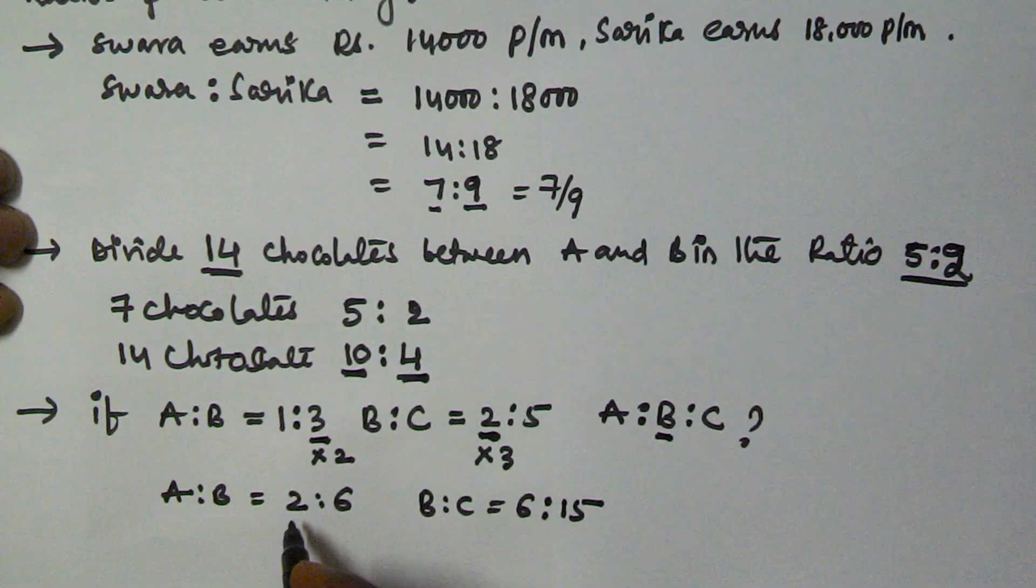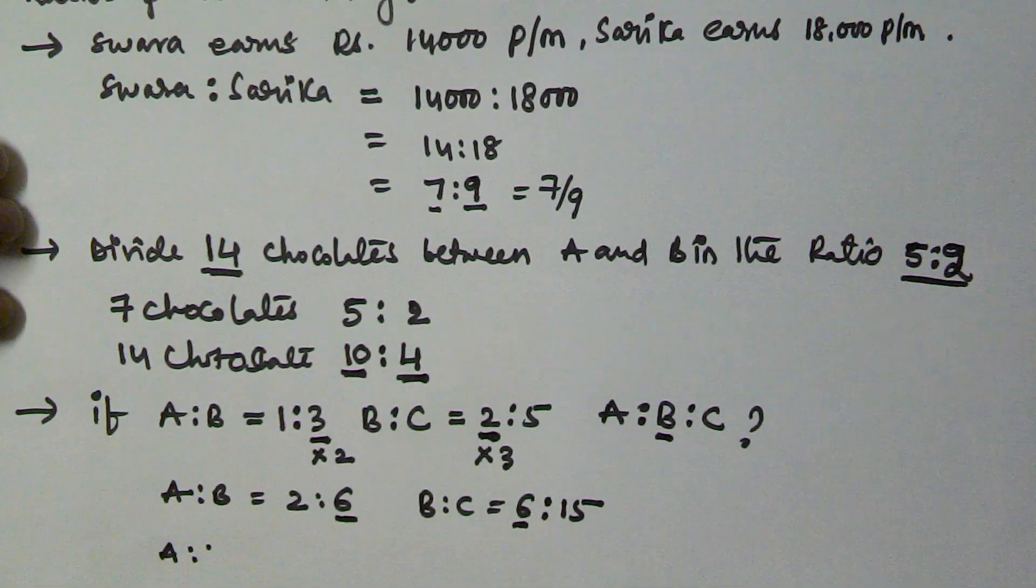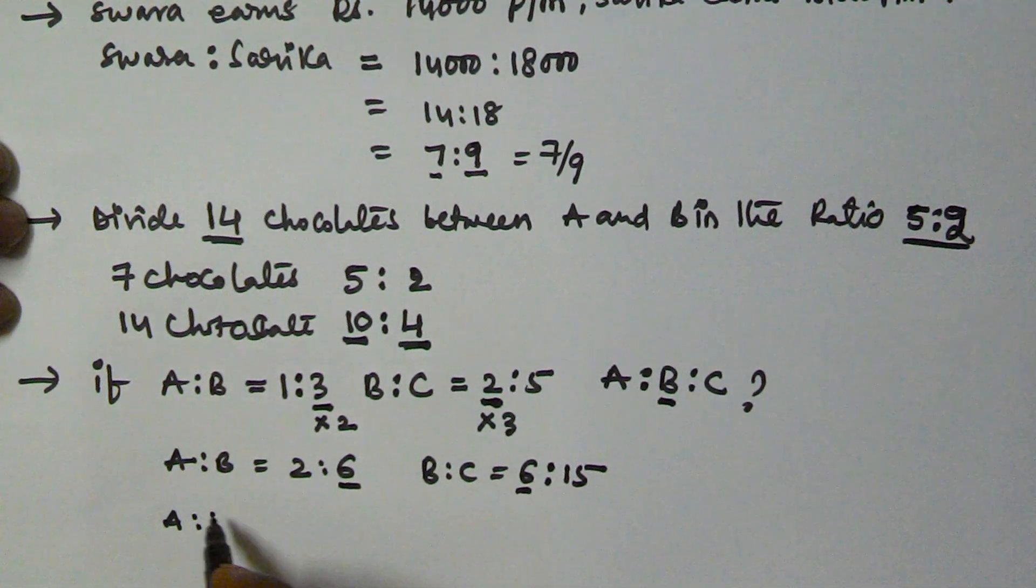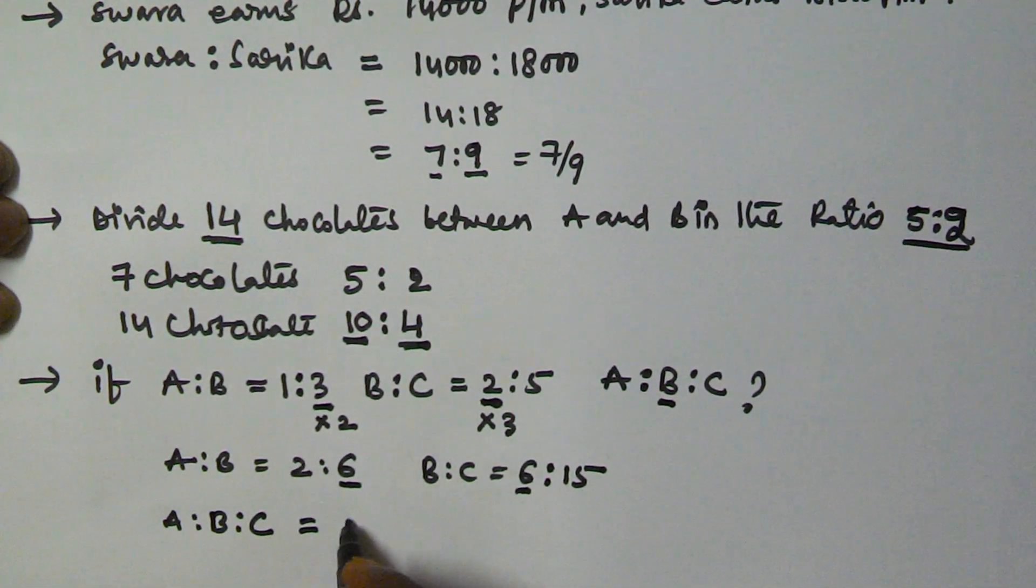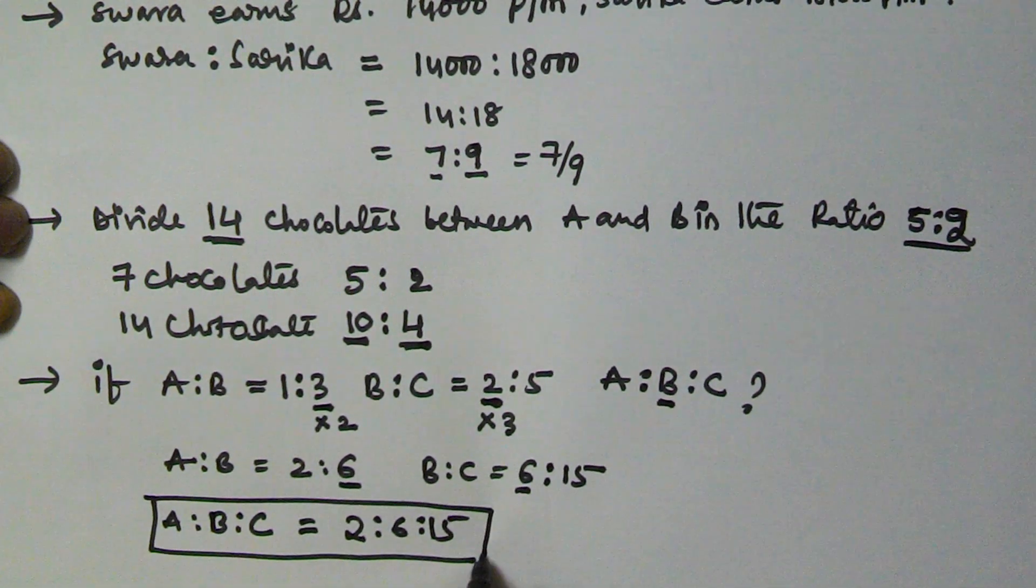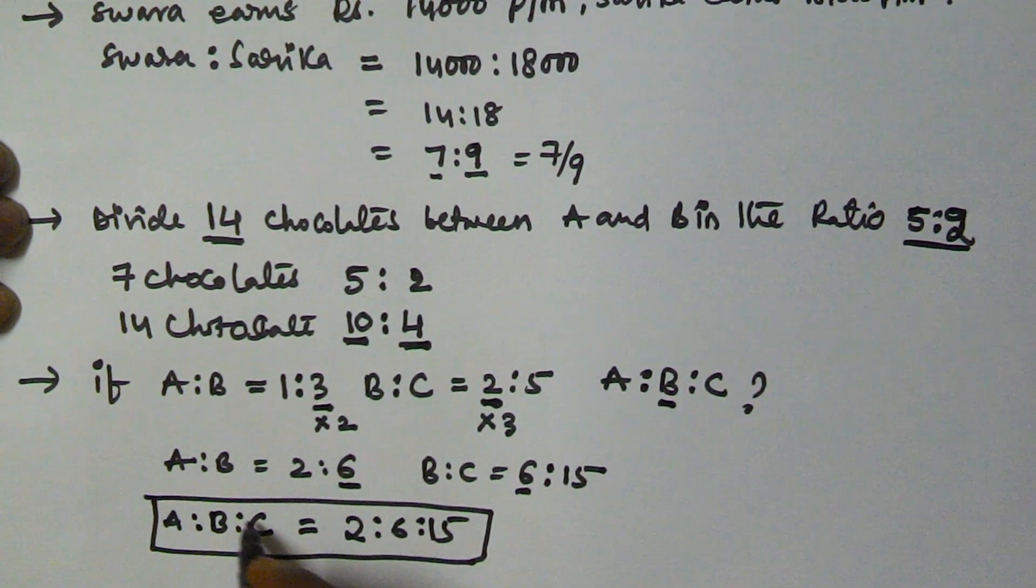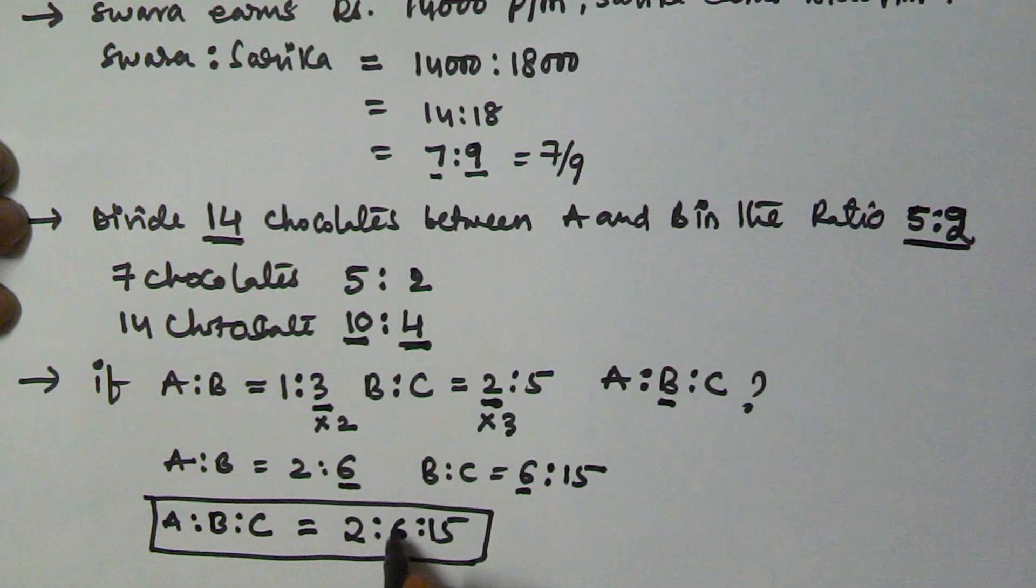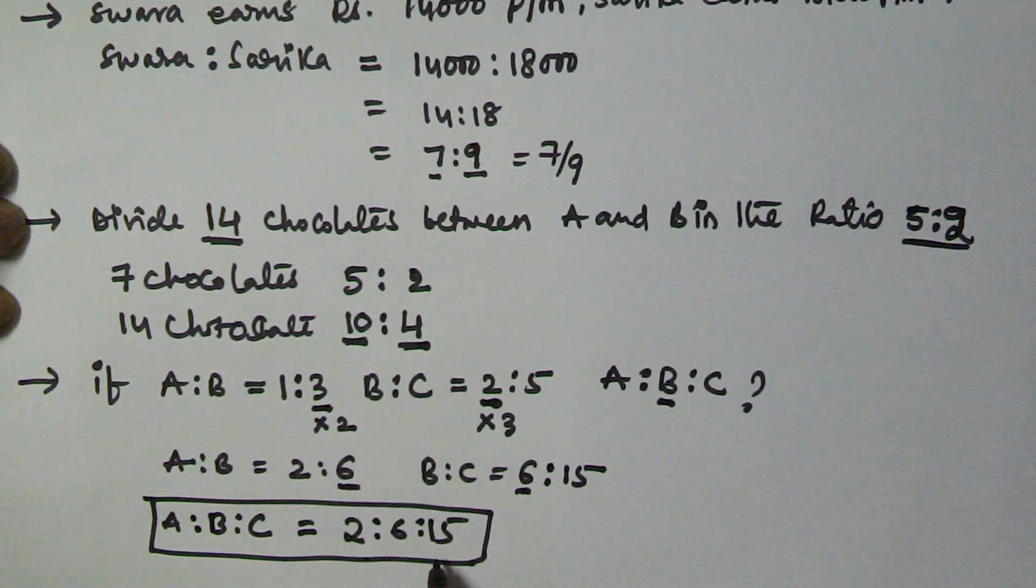So now we can write as here B is 6 and here B is 6. So we can write A colon B colon C is equal to 2 ratio 6 ratio 15. So this is the ratio of A colon B colon C. Otherwise A ratio B ratio C is equal to 2 ratio 6 ratio 15. I hope you got this one.